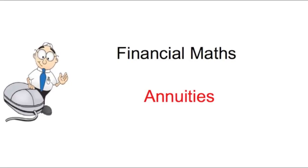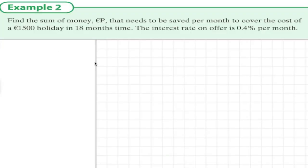Annuities example two. In this question we want to find a sum of money that needs to be saved each month to cover the cost of a €1500 holiday in 18 months time and we know the interest rate.